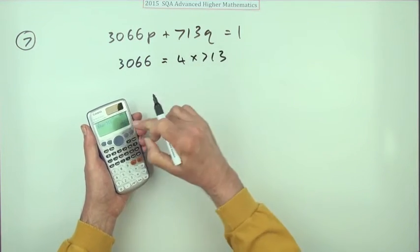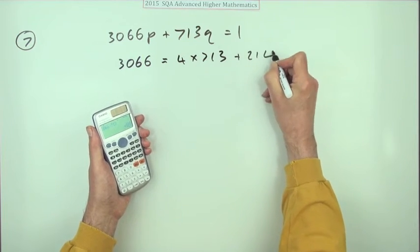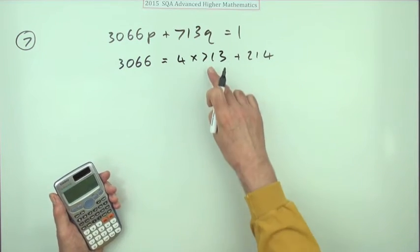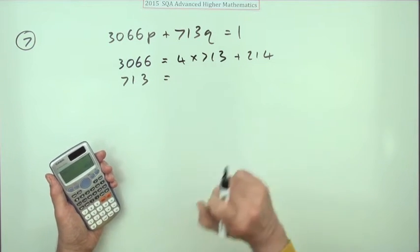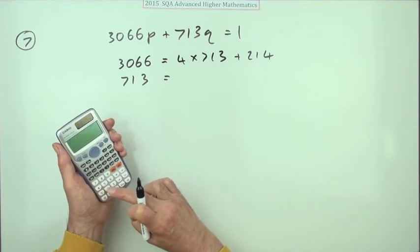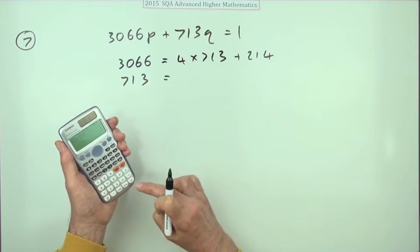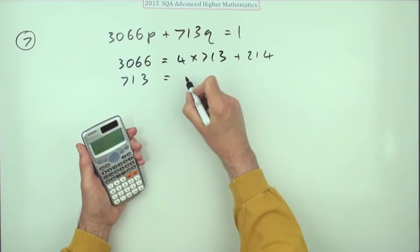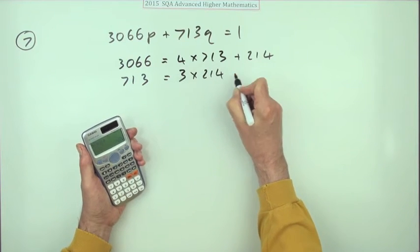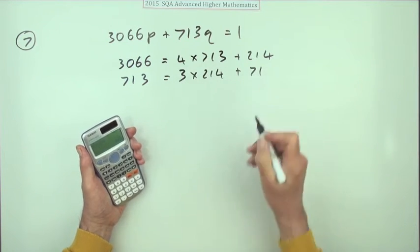So that wasn't it. Let's start again then. 713 divided by 214. Press the fraction button again and it goes 3 times, 3 times 214 with 71 in the numerator left over.